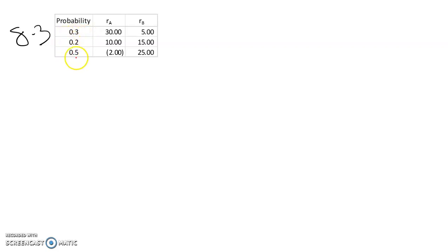Each of the returns has these probabilities: 30%, 20%, and 50%, and then we have these expected returns. So we're going to calculate each of those expected returns individually.